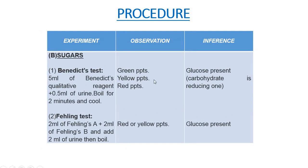The second test we will perform is for sugars: the Benedict's test and the Fehling's test. The Benedict's test is a semi-quantitative test where the color appearance depends upon the concentration of sugar present. We take 5 ml of Benedict's qualitative reagent and add 0.5 ml of urine sample, boil it for 2 minutes and cool it. If we observe a green, yellow, or red precipitate, then glucose is present. The color — green, yellow, or red — depends upon the concentration of sugar in the urine sample.